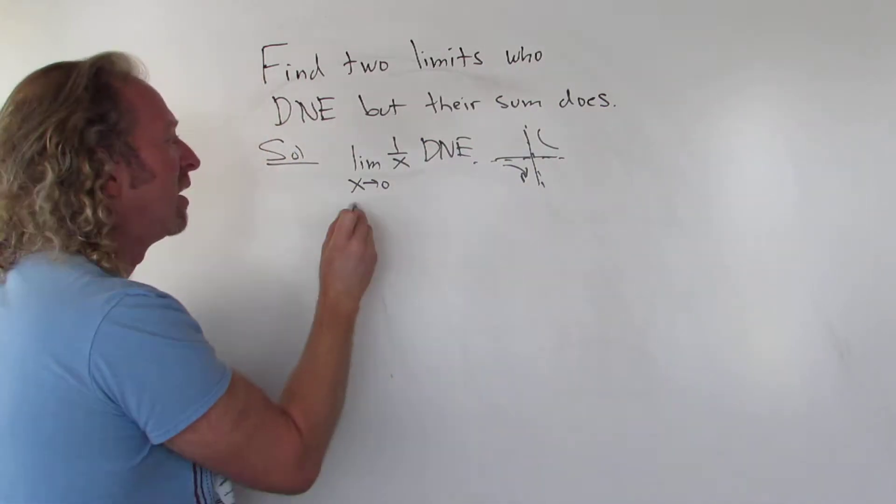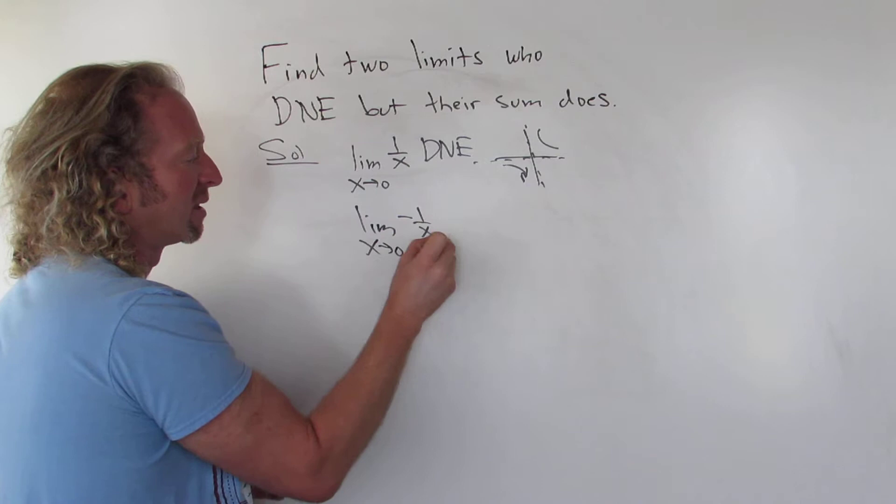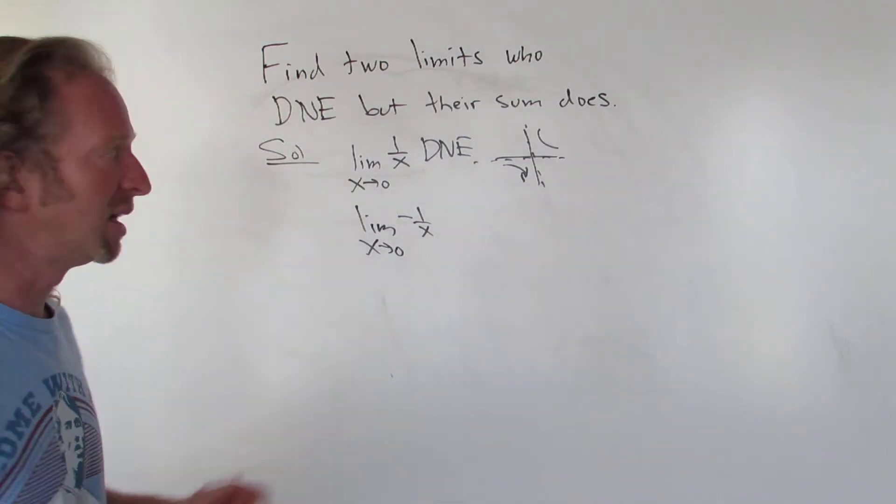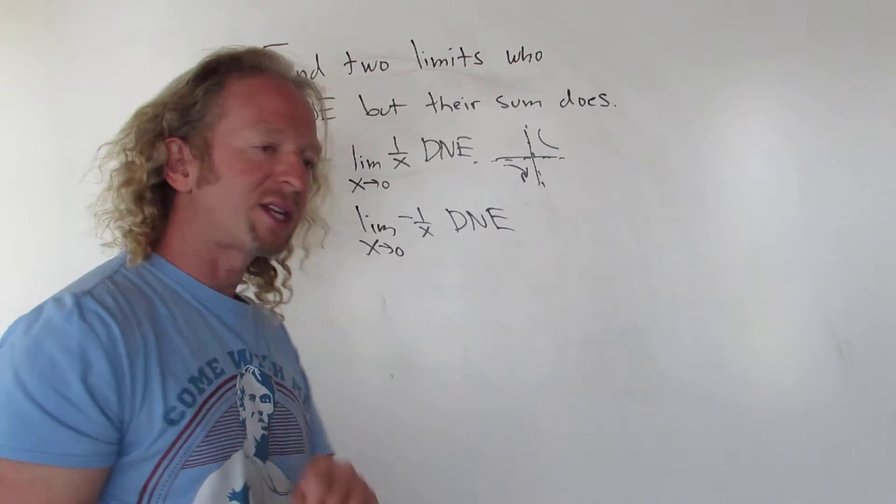And then we can be totally cheesy. The other one that's DNE that we can use is negative 1 over x. It's not going to change much. It's still going to be DNE. So both of these DNE, but then when you add them, the magic happens.